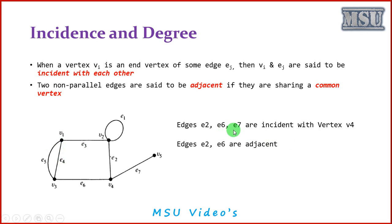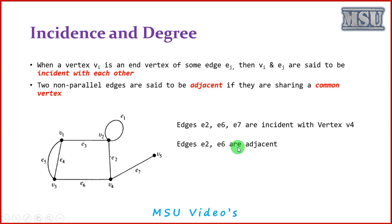Edges E2, E6, and E7 are all incident with vertex V4. Considering vertex V4, the edges E6, E2, and E7 are all incident with it. Edges E2 and E6 are adjacent since they share a common vertex. Similarly, there are other adjacent edge pairs available.